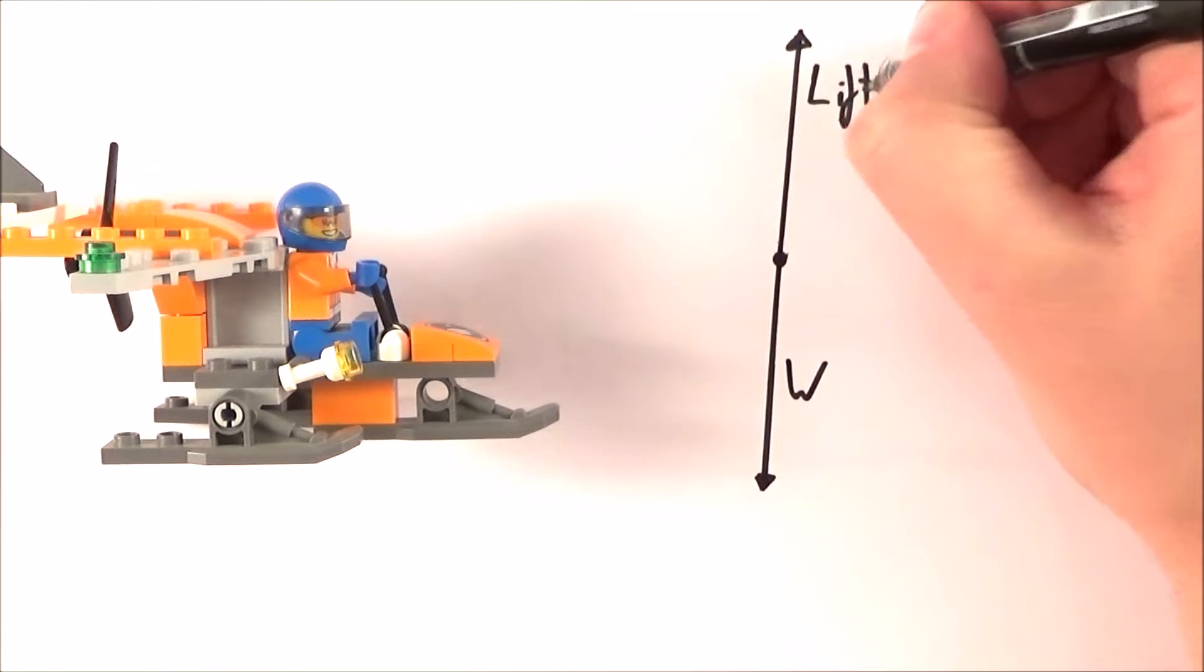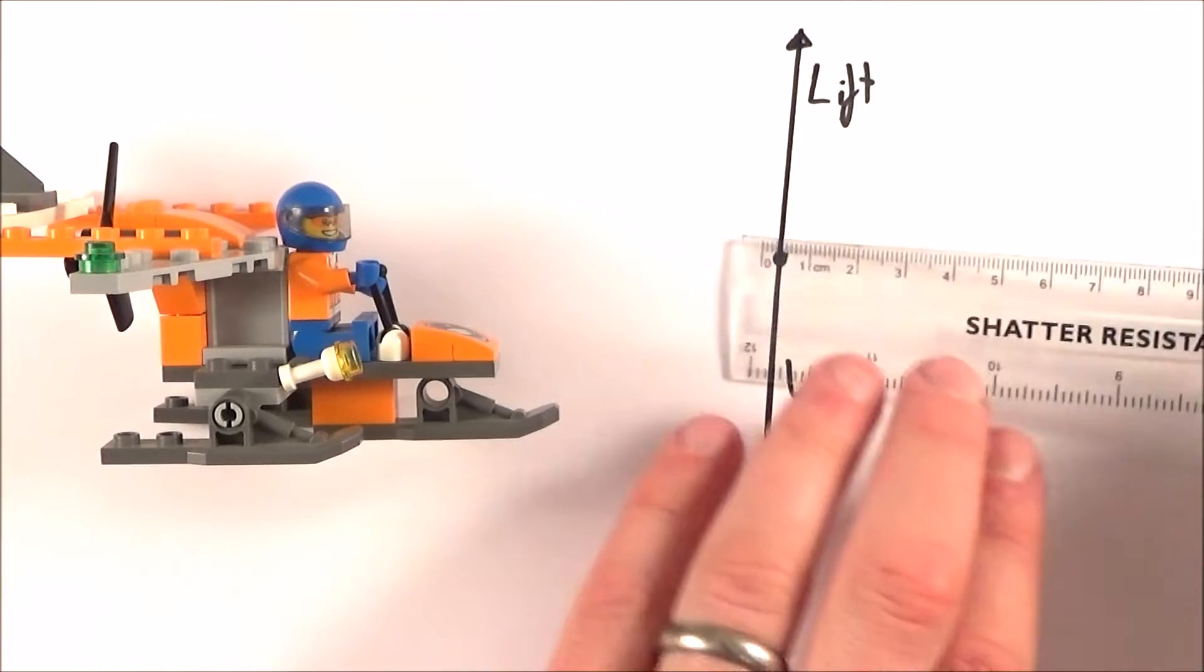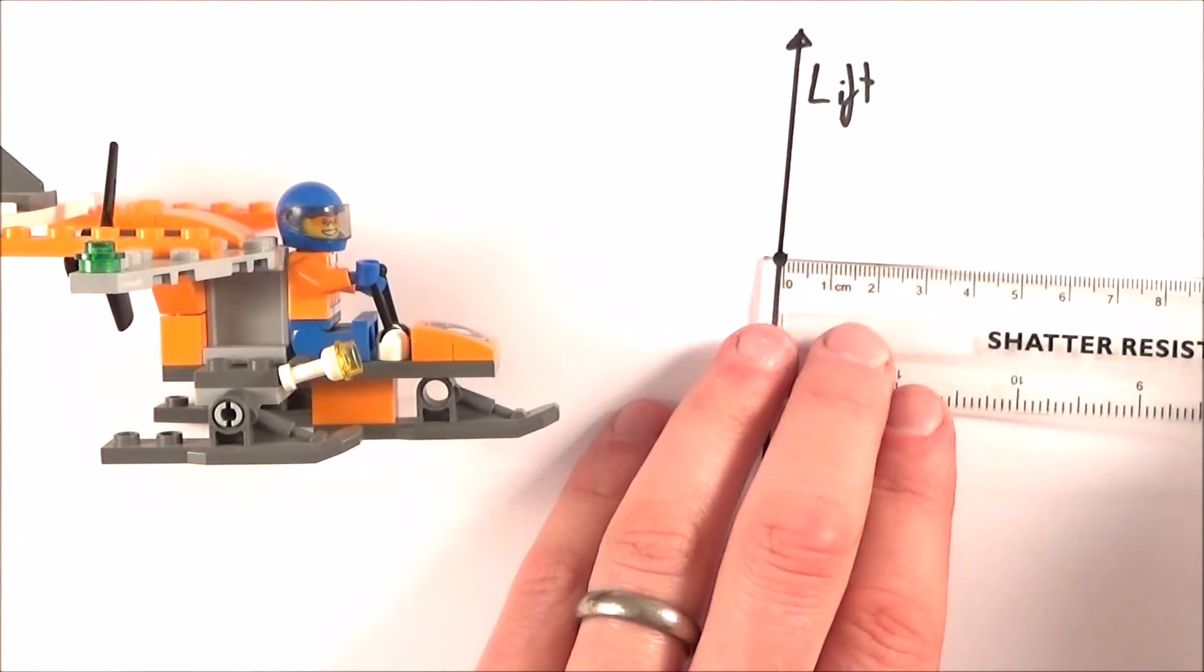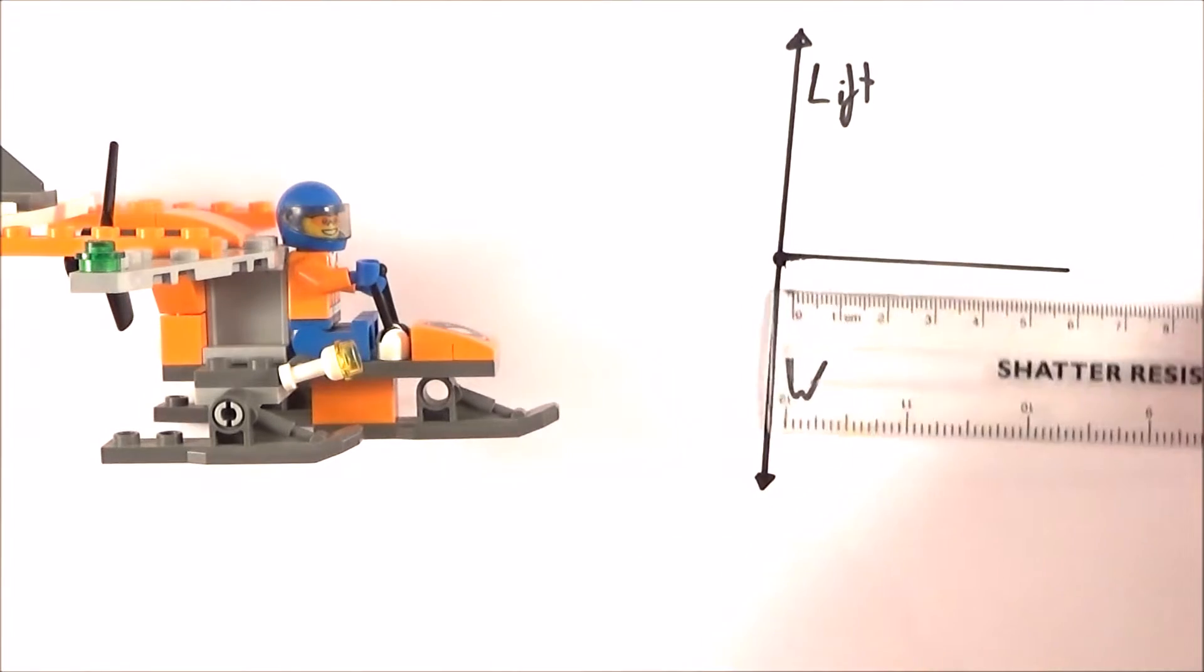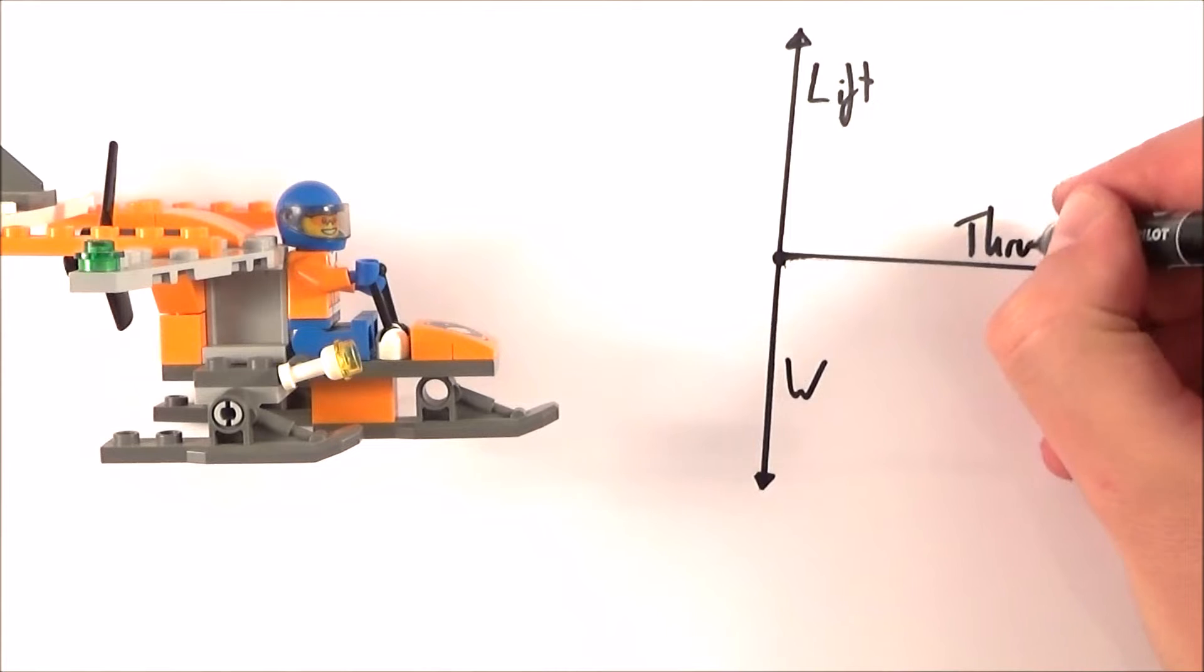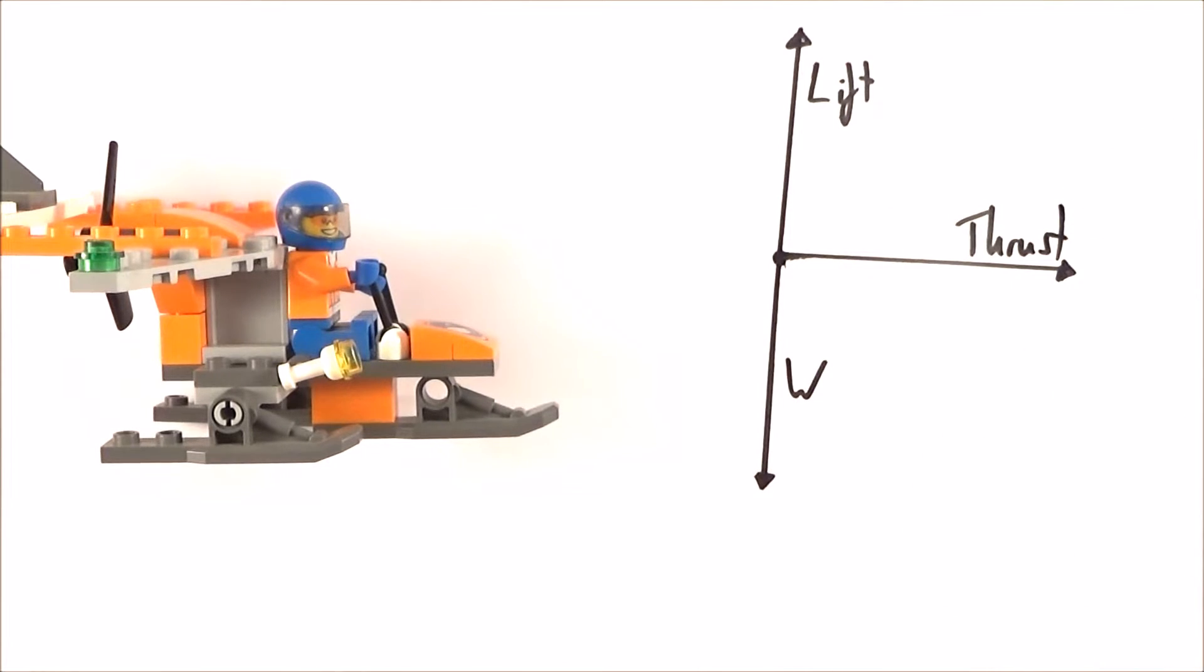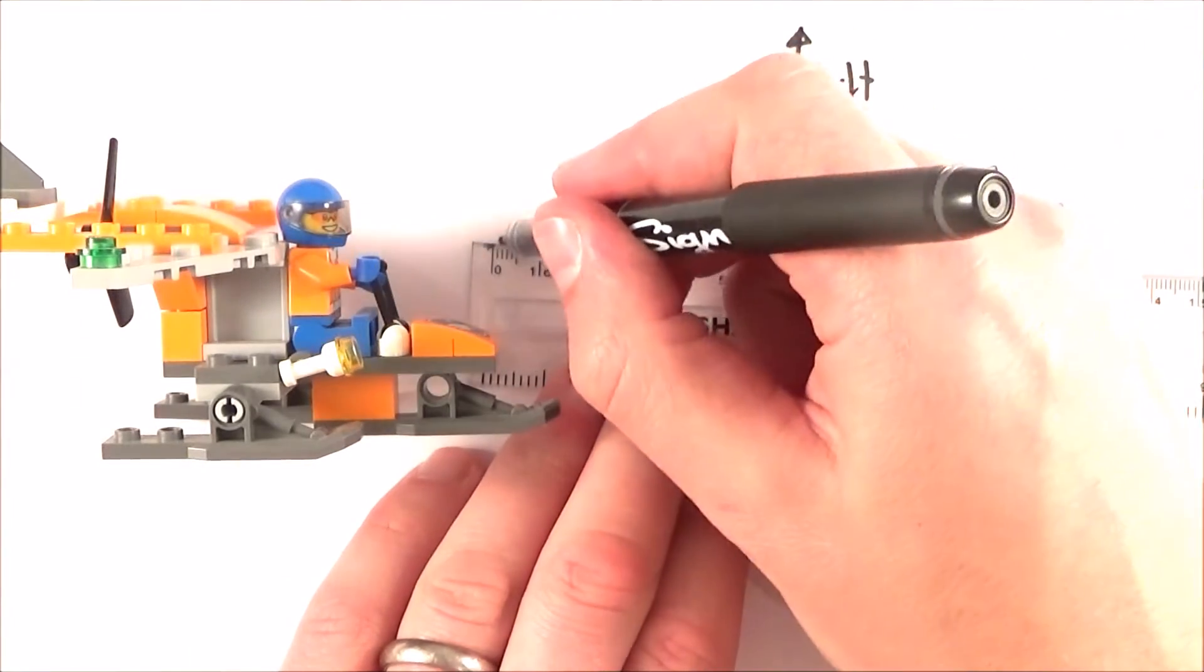We've got the weight acting down and the lift acting upwards. Now there's going to be a force pushing it forward, and that force is the thrust. Provided it's going in level flight and not getting faster or slower, there must also be some kind of air resistance, and I'm going to call that the drag force. I'm just going to draw that on as well.